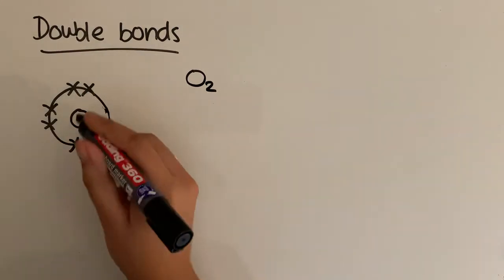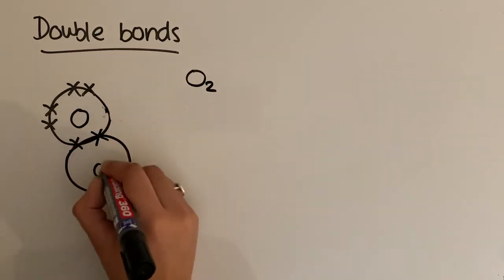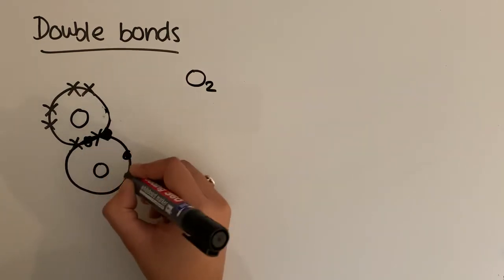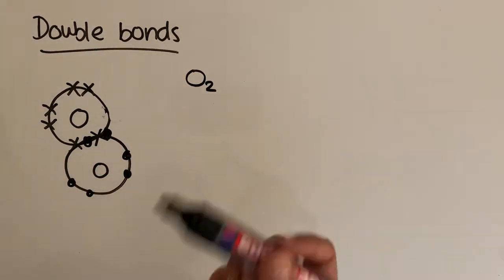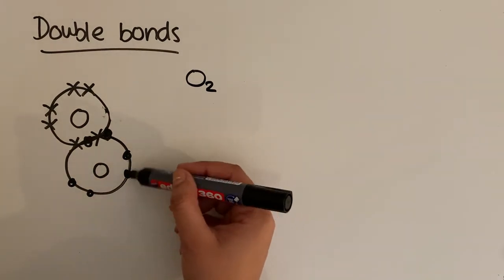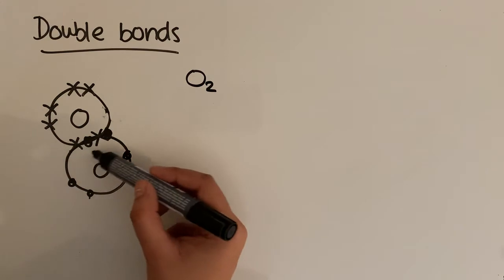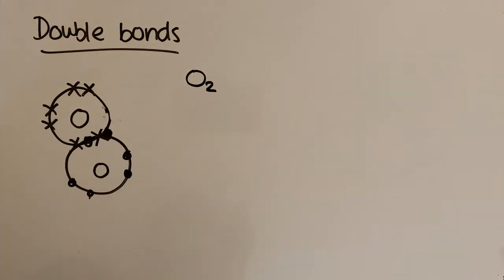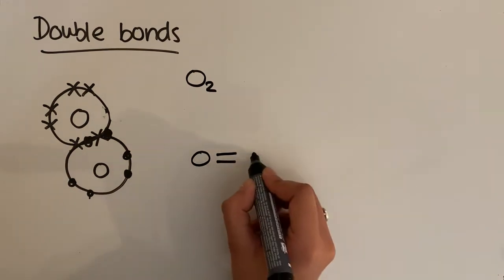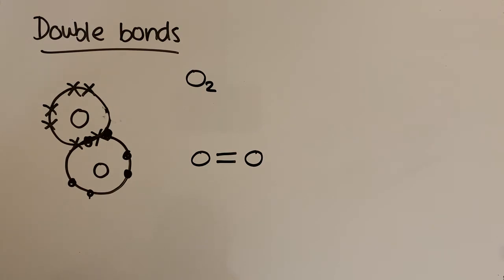Drawing that out: each oxygen starts with six electrons. They share four electrons in total — two pairs — and each pair is one covalent bond. So in the displayed formula, we use two lines to represent a double bond. Each oxygen ends up happy with eight outer electrons. That's the dot-and-cross diagram for an oxygen molecule, O2.